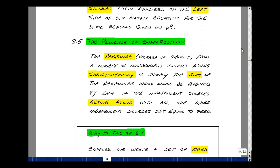Let me first state the principle of superposition, then I'll give you an example. The response from a number of independent sources acting simultaneously is simply the sum of the responses which would be produced by each of the independent sources acting alone with all of the other independent sources set equal to zero.